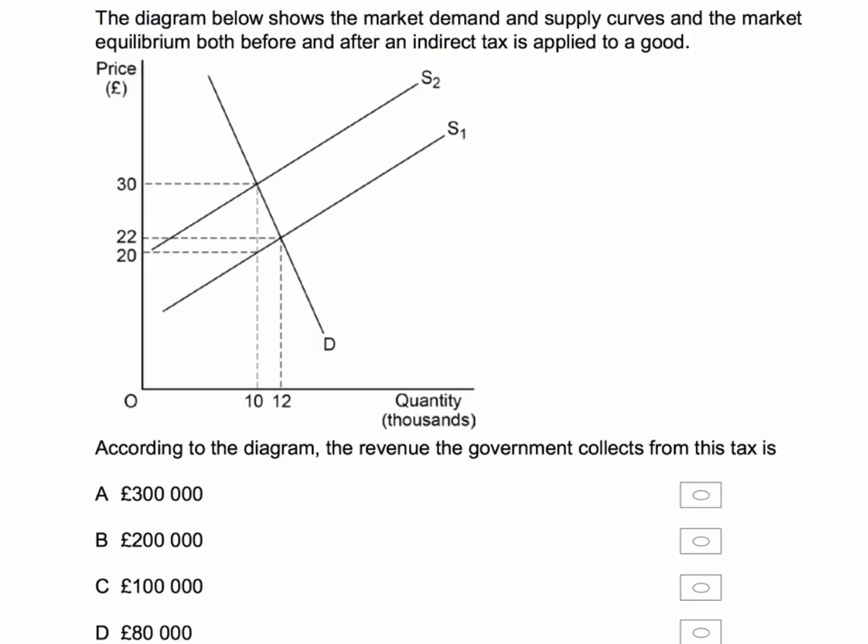Notice, if we go back to the diagram, there's been an inward shift of supply. It's been a specific tax per unit because there's been a parallel inward shift of supply. The market equilibrium price has gone up from £22 to £30, so the price has gone up by £8, but that's not actually the level of the tax — we'll come back to that in a second.